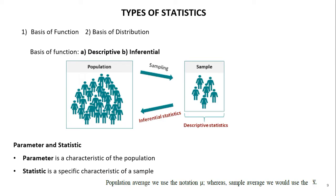Statistics is divided on the basis of function and on the basis of distribution. Based on function, there are two types: descriptive and inferential. In descriptive statistics, we generally take a sample and apply operations like measures of central tendency and measures of dispersion to get insight into the data. When we want to make estimations or predictions for the population from the sample, we use inferential statistics.